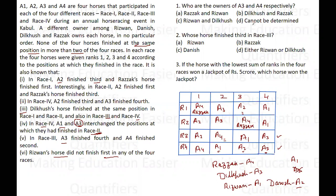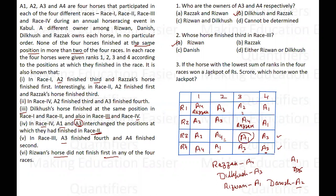This completes the arrangement. The first question asks: who are the owners of a3 and a4 respectively? The answer is Dilkhush and Razak — option B. The second question asks: whose horse finished third in race 3? Third in race 3 was a1, and a1 is Rizwan's horse — answer is option A.